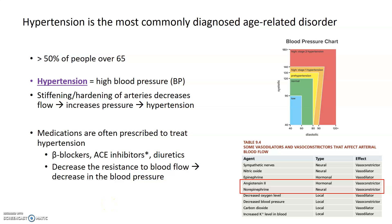There are several common age-related disorders of the cardiovascular system. Hypertension is not only a common age-related disorder that affects the cardiovascular system, but it's actually the most commonly diagnosed age-related disorder altogether. Hypertension is defined as high blood pressure, and it occurs in over 50% of people over the age of 65.